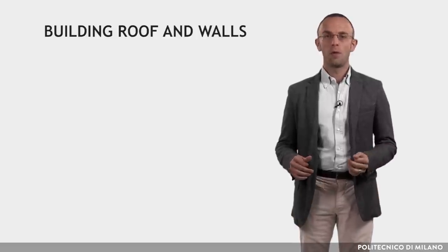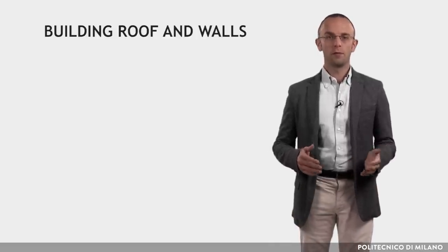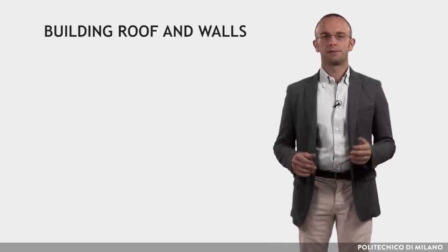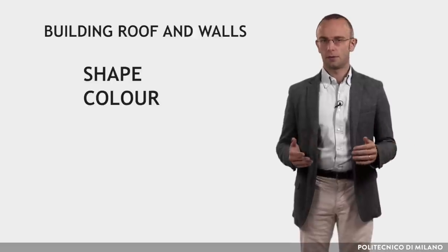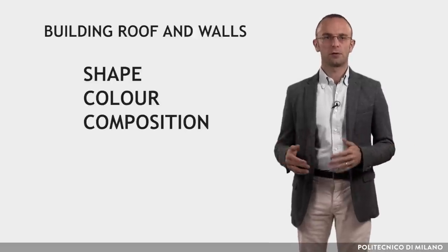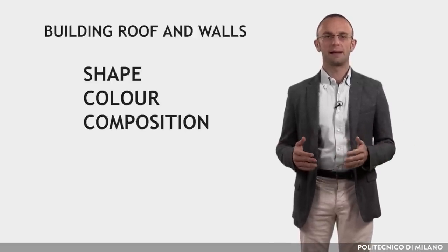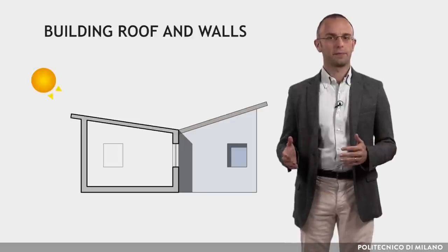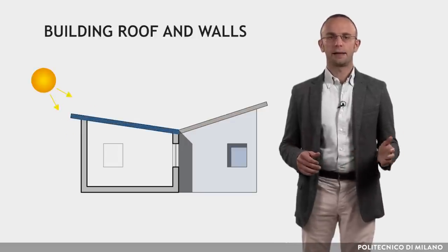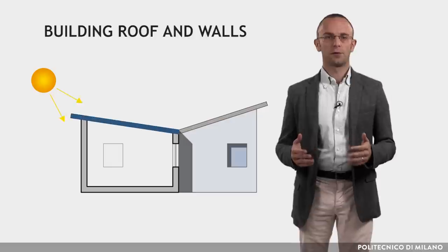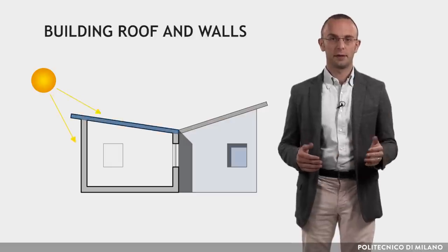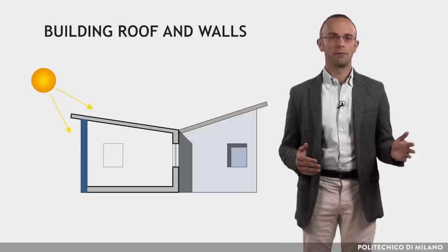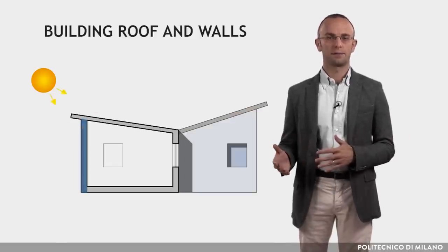In this lecture we will go through the roof and walls design by climatic zone. Decisions about shape, color and composition of the roof and the walls of a building are crucial, because they determine its overall performance. Roof design in single-story buildings is especially critical, while the decisions about the walls are equally critical in both low- and high-rise buildings.